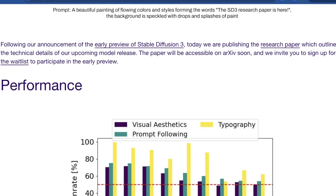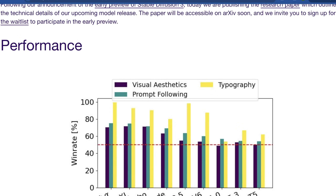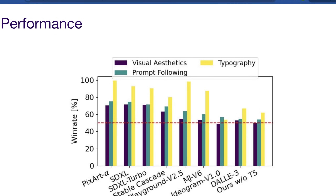Following their announcement of the early preview of Stable Diffusion 3, they are publishing the research paper which outlines the technical details of the upcoming model release. The paper will be accessible on arXiv soon, and they invite you to sign up for the waitlist to participate in the early preview — I'm already signed up and I'll link it below so you can do that too.